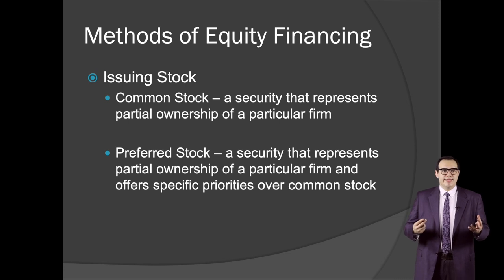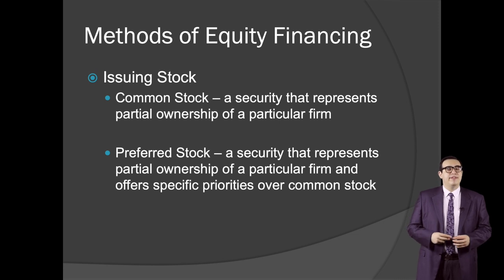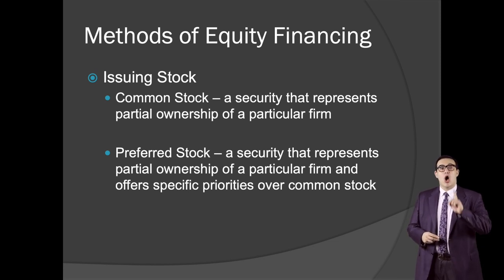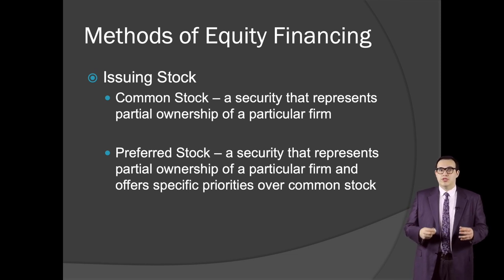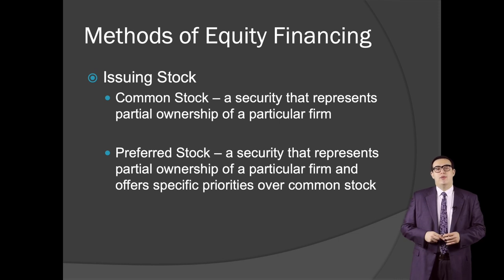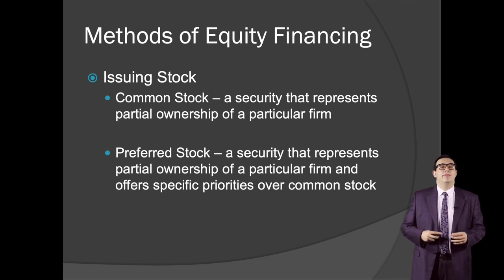In order to have full control over the company, you must have 50% plus one stock. However, if we look at international corporations, many of them have owners with less than 50% plus one. It is common practice for the largest shareholder to have a maximum of 30% to 35%, and that is why they share the management and elect the board of directors.